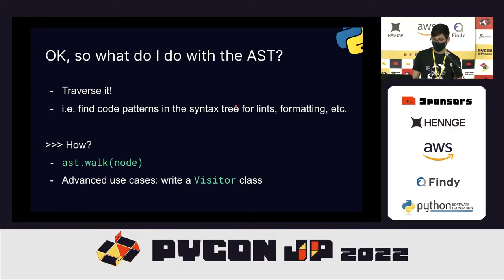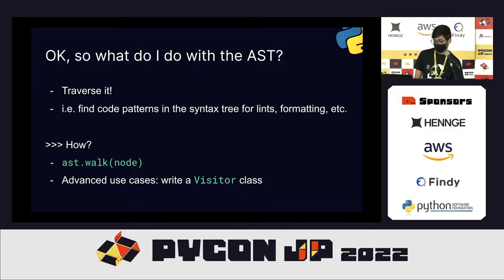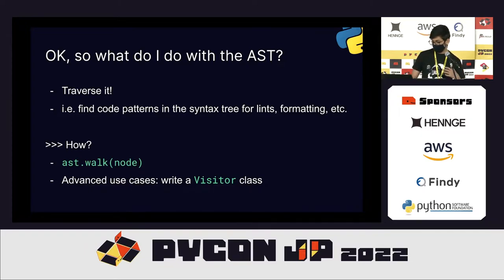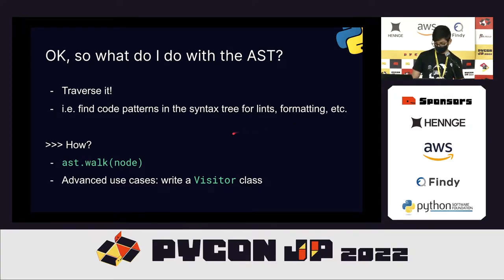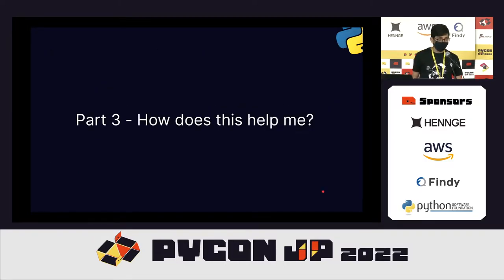Now, what do you do with an AST? The obvious answer is to traverse it — you find certain code patterns and say that pattern is bad, or that pattern can be converted to something better. You can use it for formatting, linting, and so many other things. Let's see how this helps maintain your codebase.